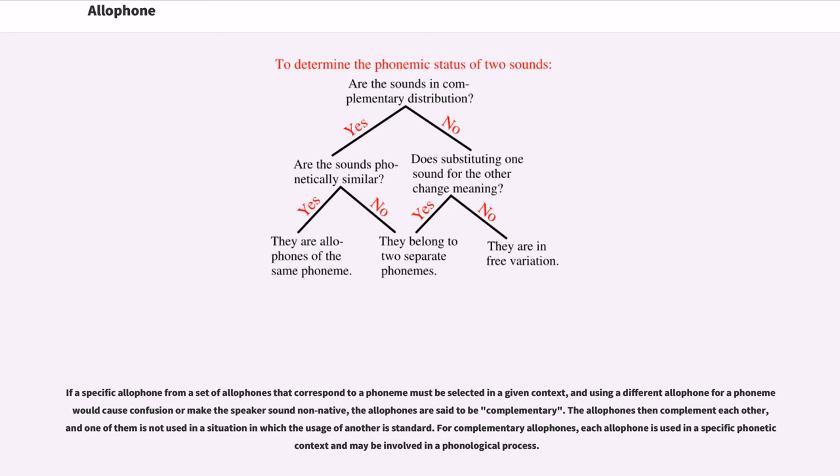If a specific allophone from a set of allophones that correspond to a phoneme must be selected in a given context, and using a different allophone for a phoneme would cause confusion or make the speaker sound non-native, the allophones are said to be complementary.